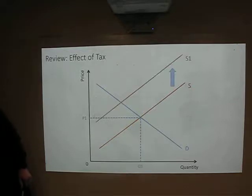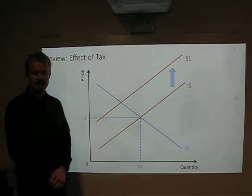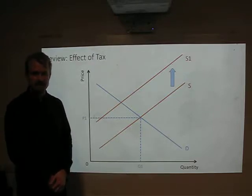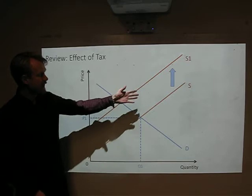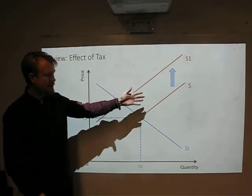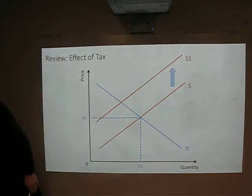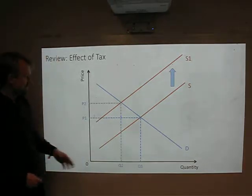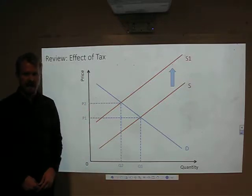To review, the effect of a tax, especially an indirect tax on sales, is to say that the effective price that suppliers would have to accept is higher by the value of the tax. So we're saying that this is a shift upwards in the supply curve, which means that we have a lower equilibrium quantity and a higher equilibrium price as a result of the tax.